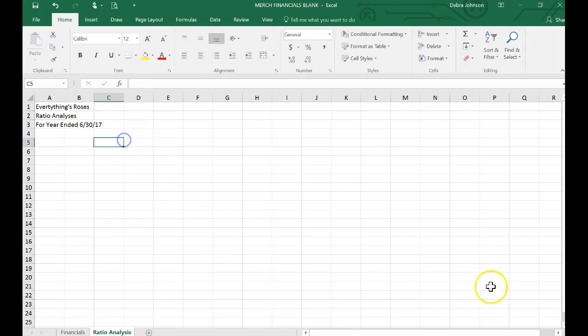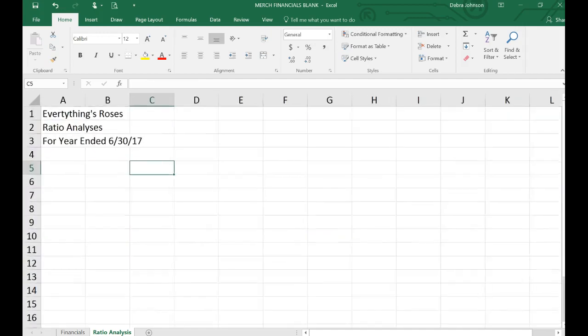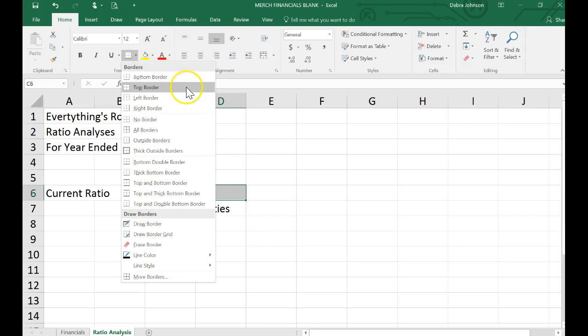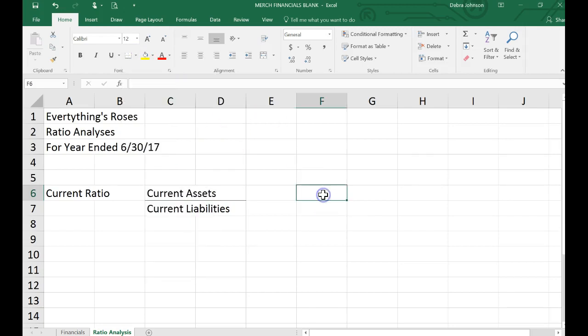Let me make this bigger so you can see it better using the zoom slider. I'll go ahead and center this at the end. For now I just want to give you an idea of how I expect the ratios to look. So I expect you to show me the formula. For example the current ratio is current assets divided by current liabilities. So I expect you to show that. And then I would expect you to go gather the data from the balance sheet.